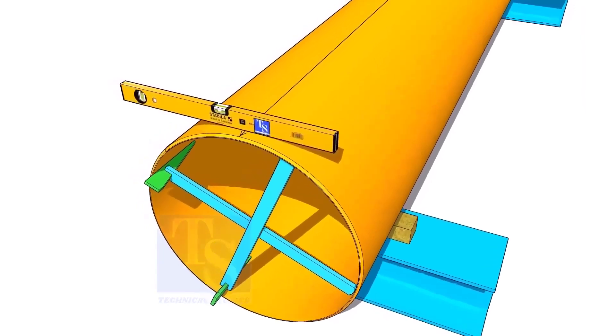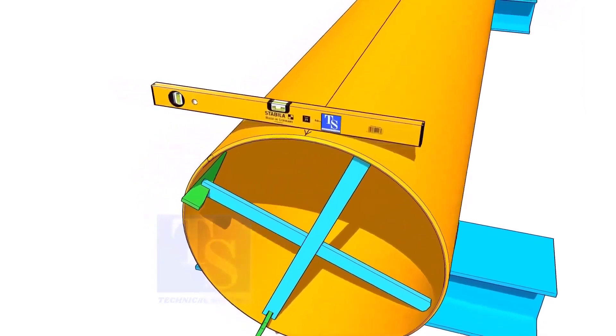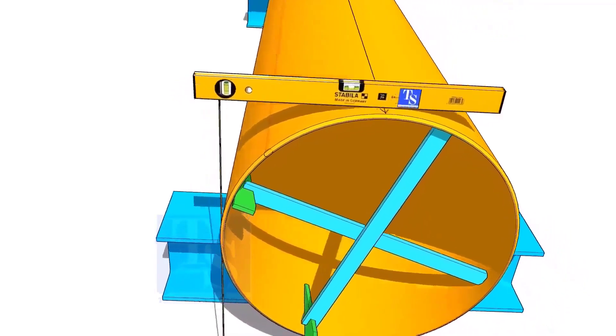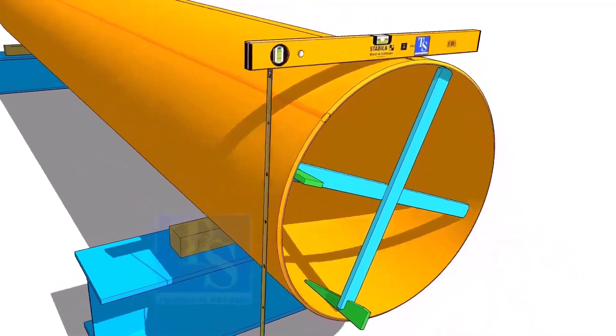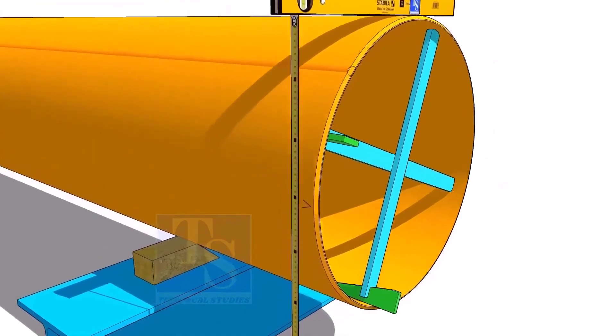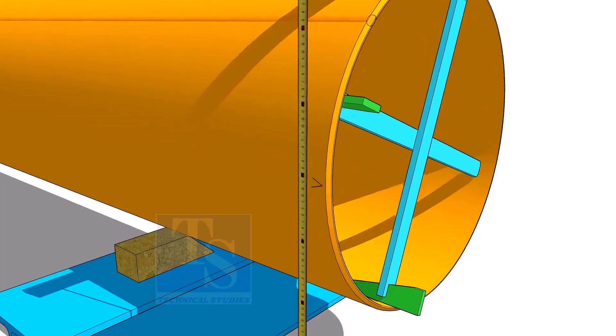Another method to mark the center line is to hold the level bottle horizontal and mark half OD on the side of the pipe. The advantage of this method is you can mark two opposite center lines at the same time.